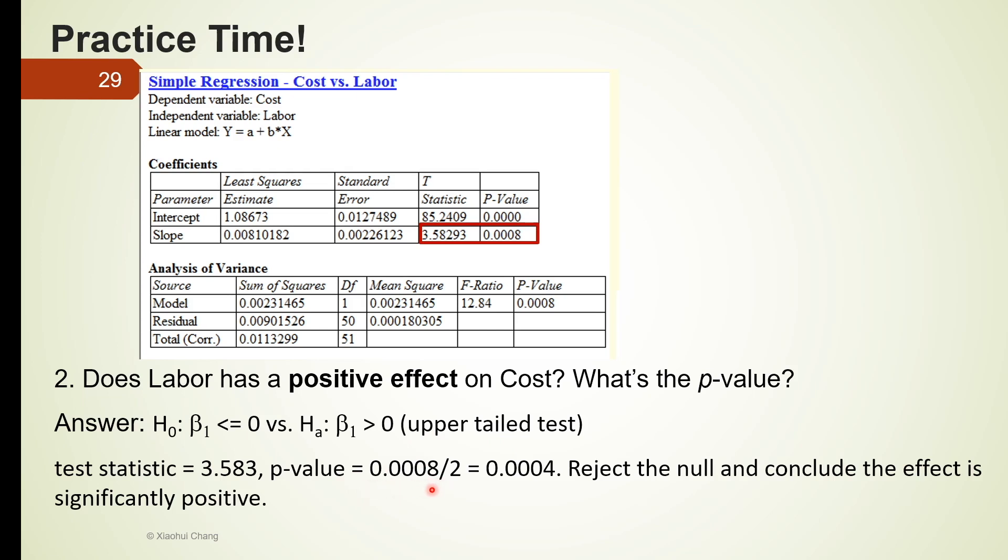Because the p-value is very small, we reject the null and conclude the alternative is true. The alternative says the slope coefficient or the effect is significantly positive. So yes, labor has a positive effect on cost.